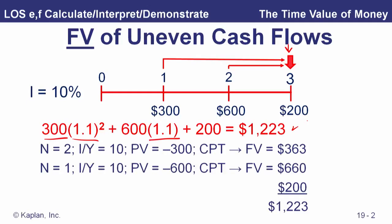There's each piece on the calculator. Notice the last one is a time-three value — that last deposit — so we don't have to compound that at all.